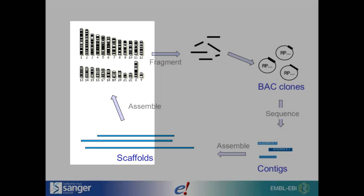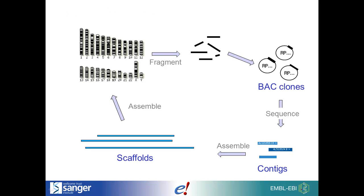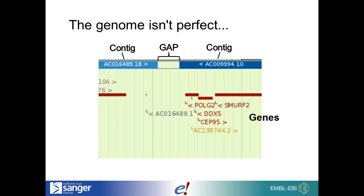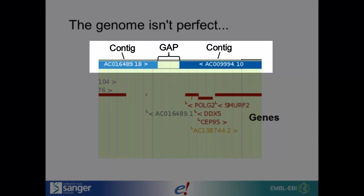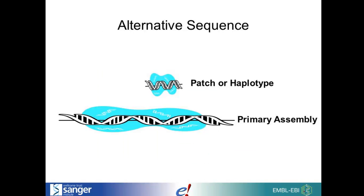This process results in the primary assembly, representing a single version of the genome. At present, the genome assembly isn't perfect. Gaps remain which need to be filled, and some sequence in the primary assembly contains errors. In addition, the genome has regions with known haplotypes that cannot be narrowed down to one sequence. Where there are known alternatives or corrections to the genomic sequence in the primary assembly, the GRC makes the sequence available as alternative sequence.